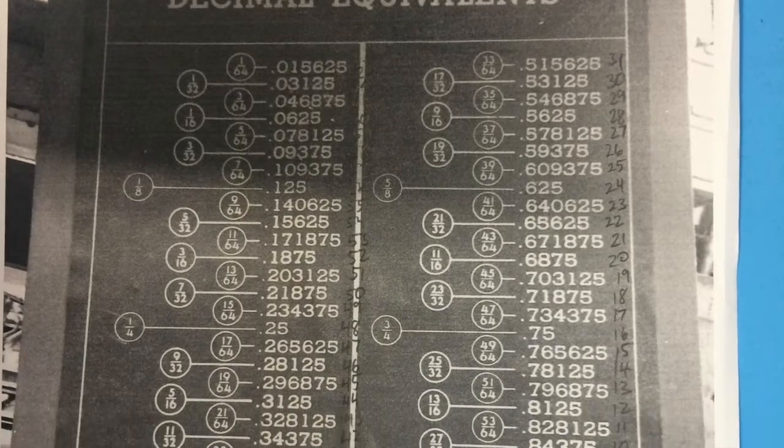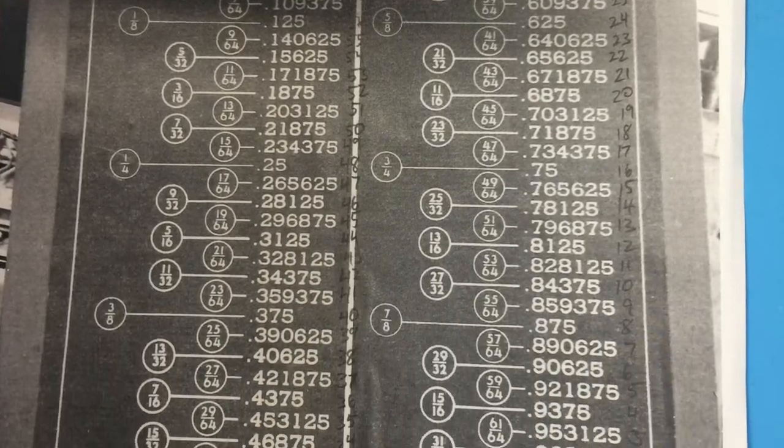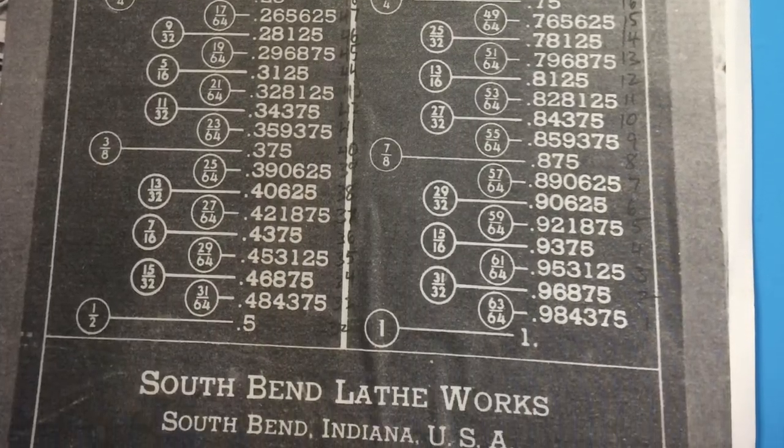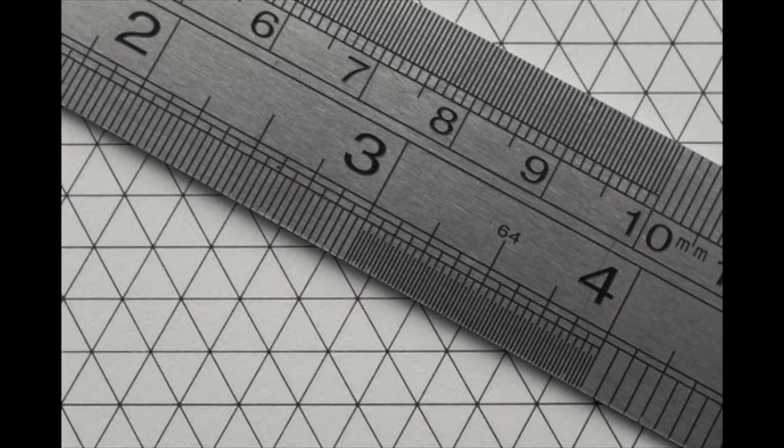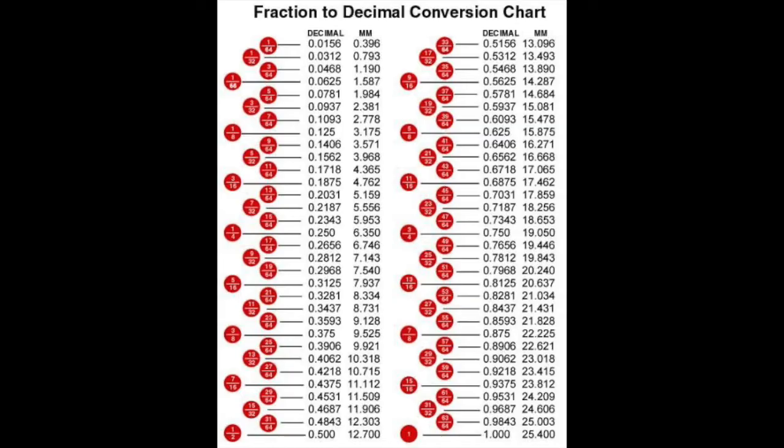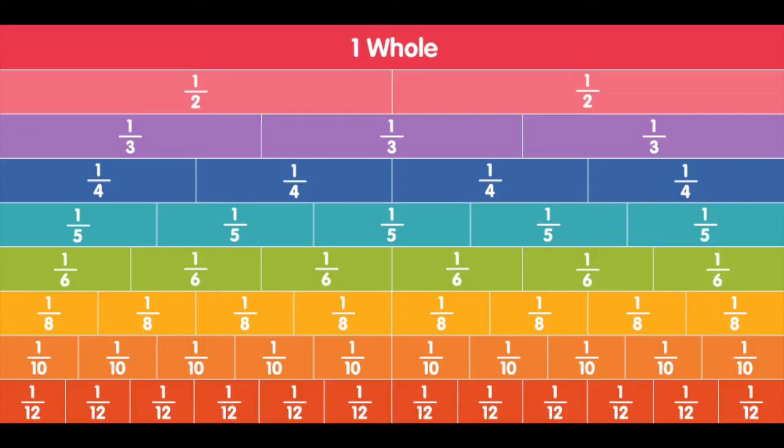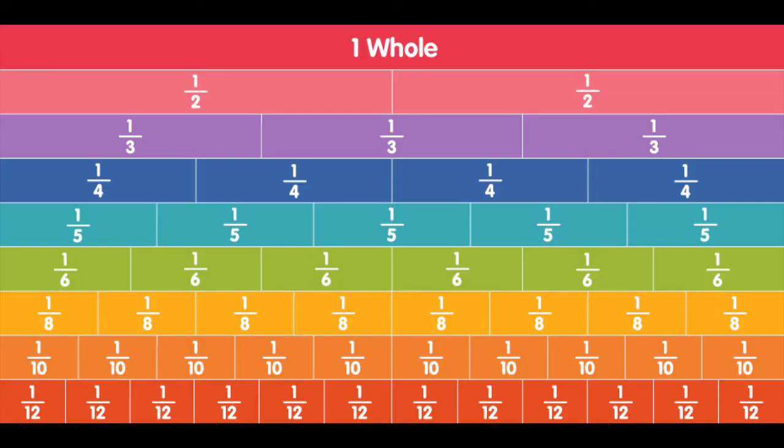What I want to show you today is a conversion chart from fractions to decimals, the 64ths on down. Most tape measures only go to about a 16th, but beyond that is a 32nd and a 64th. The 64ths are those tiny tinies. This conversion chart is used by people who are commonly transferring decimals from fractions and it makes it to where you don't have to know the fractions.